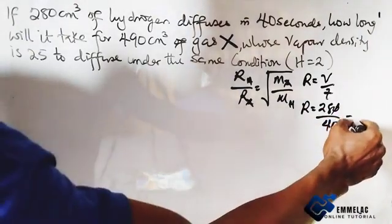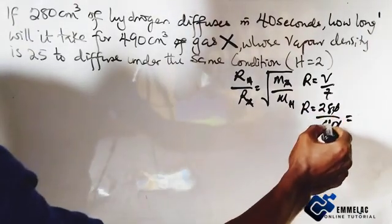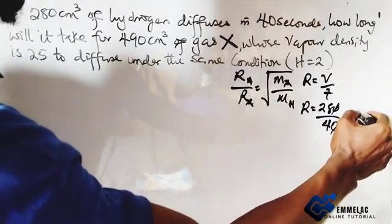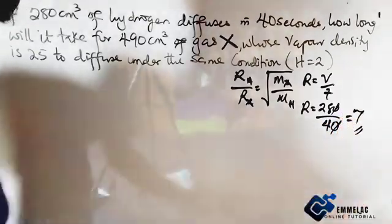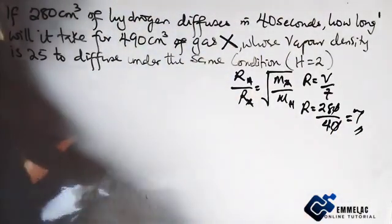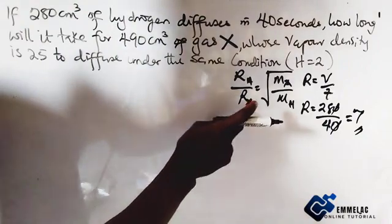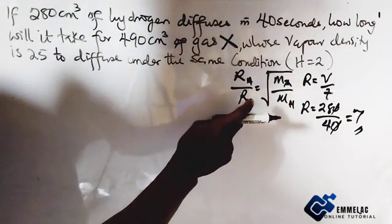Cancel the zeros, so we are left with 7 and 4 in 28 will give us 7. The rate of diffusion of hydrogen is 7.